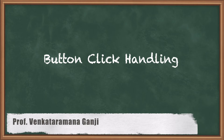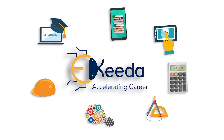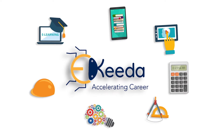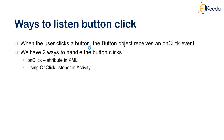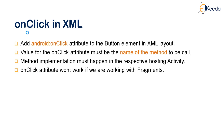Hello viewers, welcome back. In this session we are going to discuss button event handling — what are the different ways to handle the click events of a button. When the user clicks on a button, the button object receives an onClick event. This event can be handled in two ways: one is through the onClick attribute of your XML layout in a button widget, or using the OnClickListener of an activity.